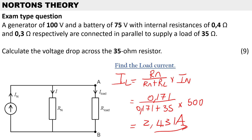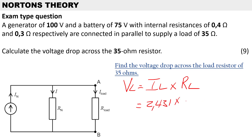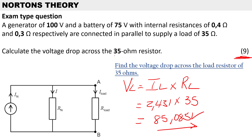For the final step, we calculate the volt drop across the load resistor: VL equals IL multiplied by RL. The load current is 2.431 amps multiplied by the load resistor of 35 ohms, giving a volt drop of 85.085 volts. We have answered the calculation — the volt drop across the 35 ohm resistor — for 9 marks, with all steps shown. Thanks very much for watching this video.